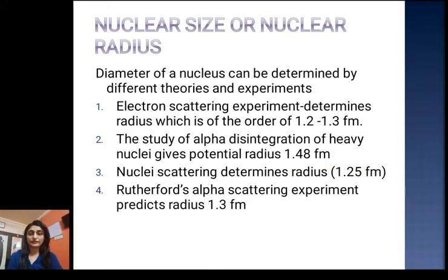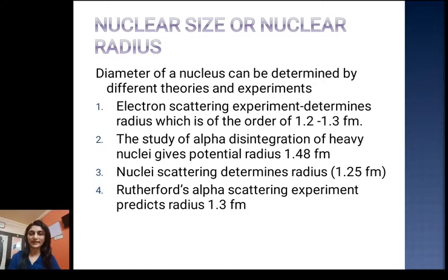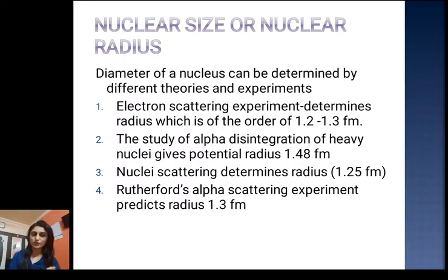Nuclear size, or nuclear radius, can be determined by different theories and experiments. The electron scattering experiment determines the radius to be of the order of 1.2 to 1.3 fermi, where one fermi is 10⁻¹⁵ meter. The study of alpha disintegration of heavy nuclei gives a potential radius of the order of 1.48 fermi. Nuclei scattering determines a radius of the order of 1.25 fermi.